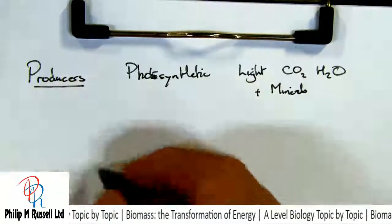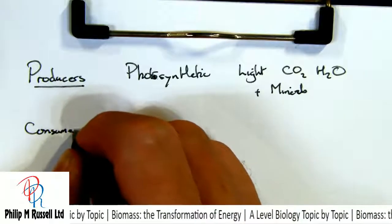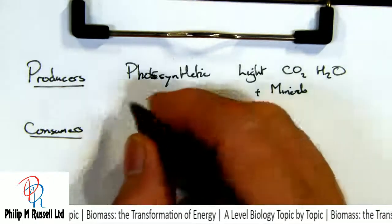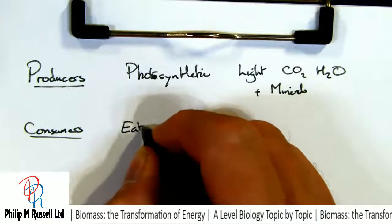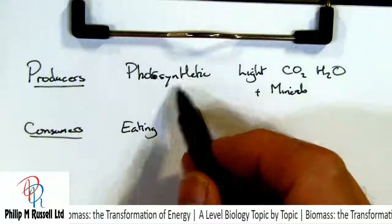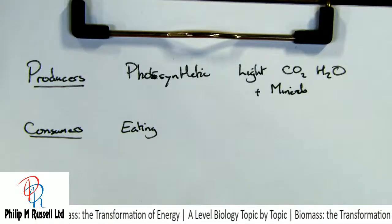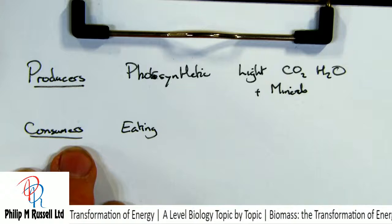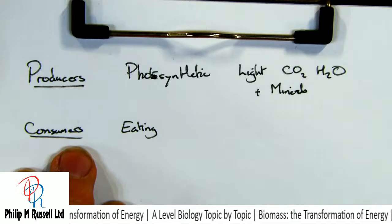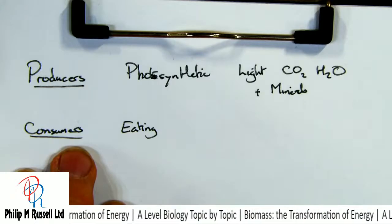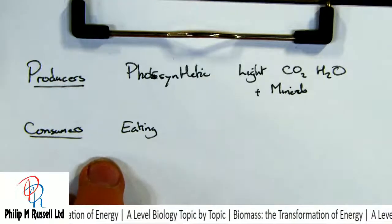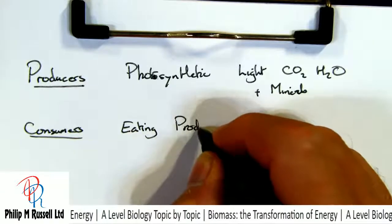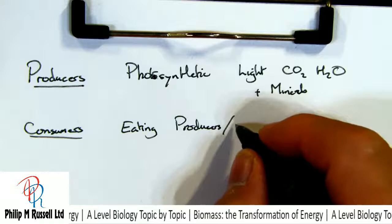Now we come to the consumers. They get all their energy basically from eating — be it either the primary producer or eating another consumer. So we have our primary consumers, typically the herbivores, and then secondary consumers and tertiary consumers, which are usually predators. They get their energy from eating producers or other consumers rather than by making energy themselves.